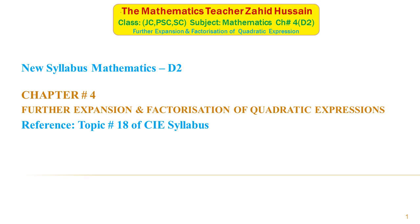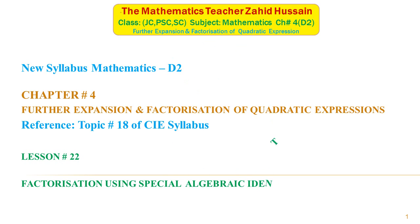Bismillahirrahmanirrahim. Assalamu alaikum students. We are studying New Syllabus Mathematics, Book 2, Chapter 4. Today is lesson number 22. In this lesson we will study factorization using special algebraic identities. Earlier in the previous lessons we studied factorization of quadratic expressions. Now this is another type of expression which we will factorize by using special algebraic identities.